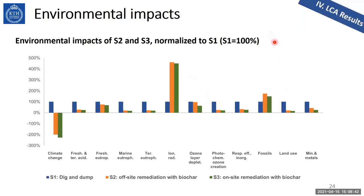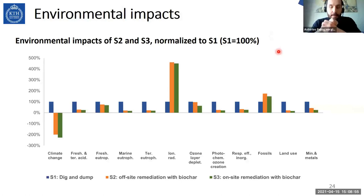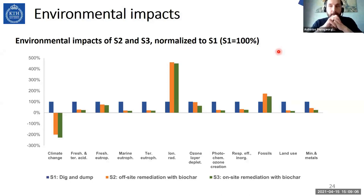Question: Can you explain what is the source of contamination of the land you are going to remediate? Answer: I'm not quite sure. It is soil from the whole urban area of Helsingborg — there is a constant flow of contaminated soil into this waste management site. It is probably from old industrial sites that are now being redeveloped in urban areas, but I cannot be sure about the source. It is probably a mix of many different sources.